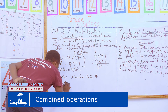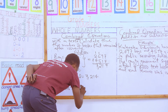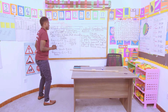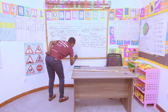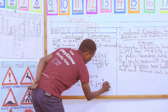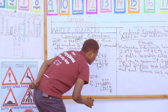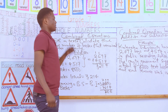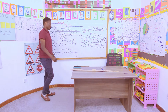Remaining books equals books supplied (BS) minus books issued (BI), which is 8,000 minus 7,214. We borrow: 10 minus 4 is 6, 9 minus 1 is 8, 9 minus 2 is 7, 7 minus 7 is 0. So the total number of books that remained after issuance is 786 books.